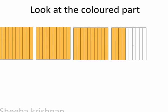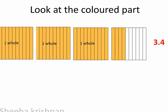Look at the colored part. Here the square is divided into 10 equal parts. All 10 parts are shaded, so we can call it 1 whole. And here also 1 whole, and here as 1 whole. Here it is divided into 10 parts and 4 parts are shaded, so 4 out of 10 are shaded. So this fraction we can write in decimal form as 3.4 — that is 3 whole parts and 4 by 10, that is 3.4.